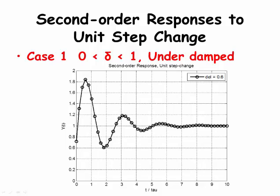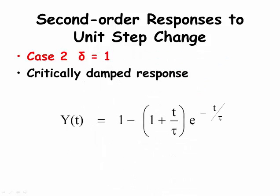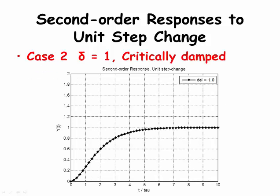Case 2, when delta equals 1, is called the critically damped response. The time-dependent equation for y(t) is shown here, and again y approaches 1 as t approaches infinity. A critically damped response does not have any overshoot, so it does not oscillate like the underdamped response. The critically damped response is characterized as the response that reaches the long-term value the fastest without any overshoot or oscillations.